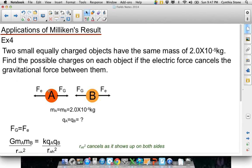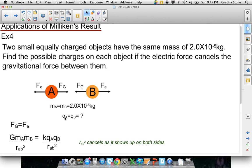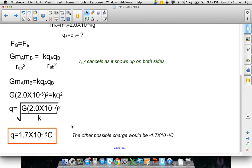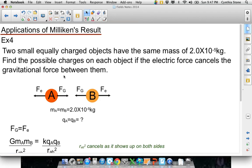I think that, oh no, I've got one more. Oh yeah. Okay, so two small, equally charged objects have the same mass. Let's find the possible charges if the electric force cancels the gravitational force between them. This is really a, I don't really think this is a Milliken's question, but anyway. Still a good example. So I've got two, they're sitting close to each other, and however, there's no net force.